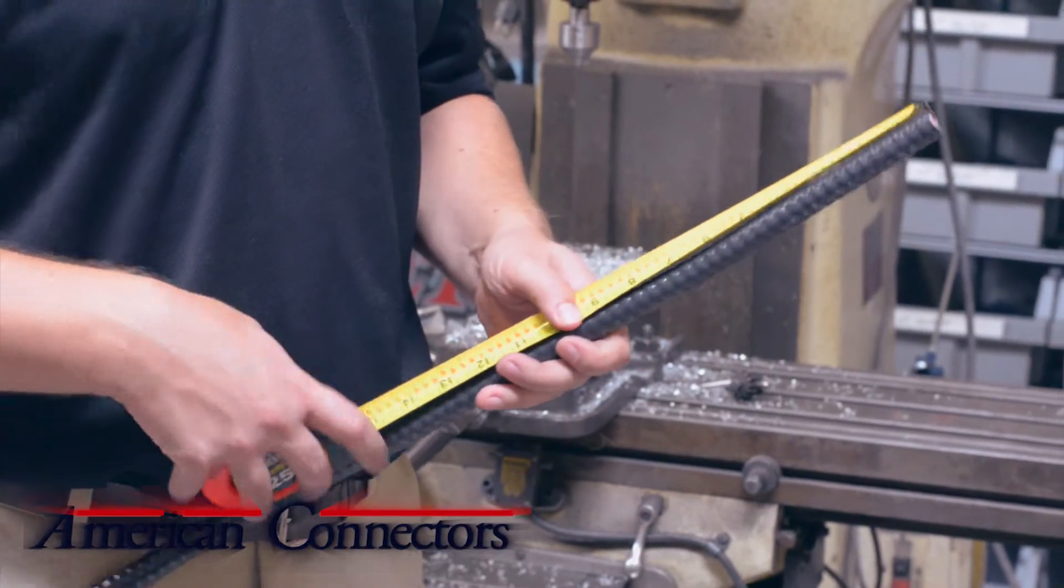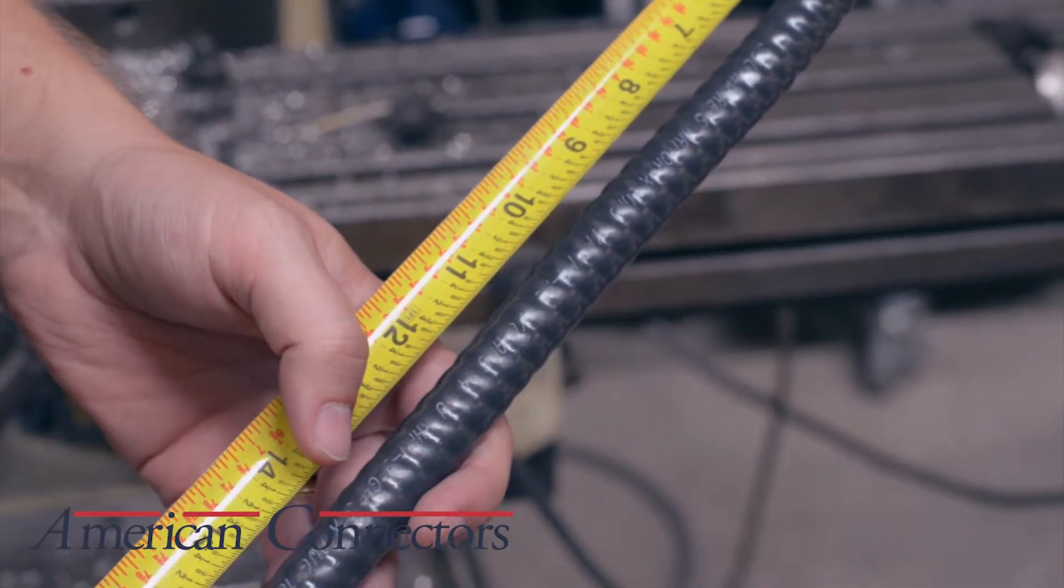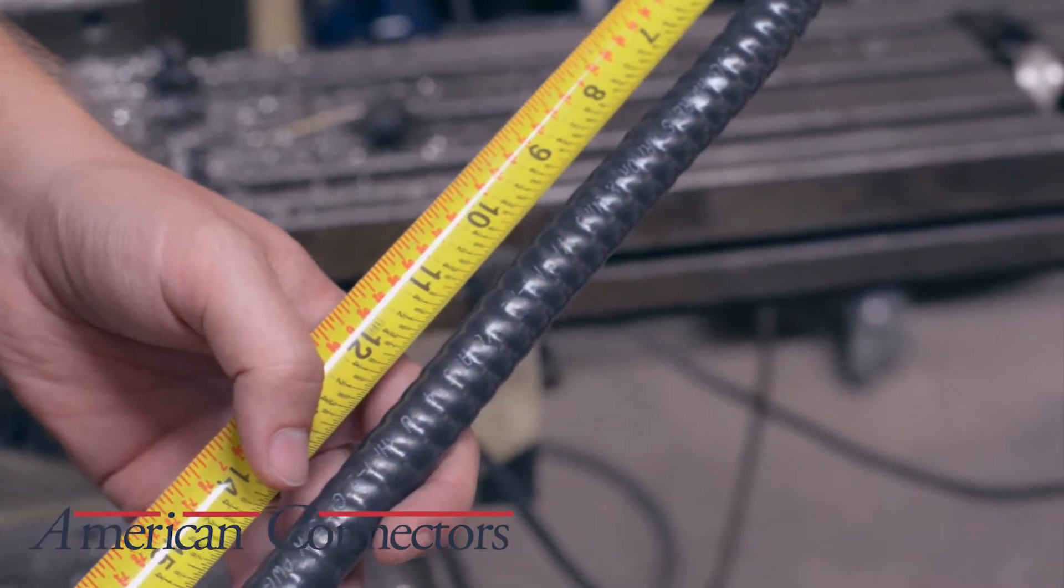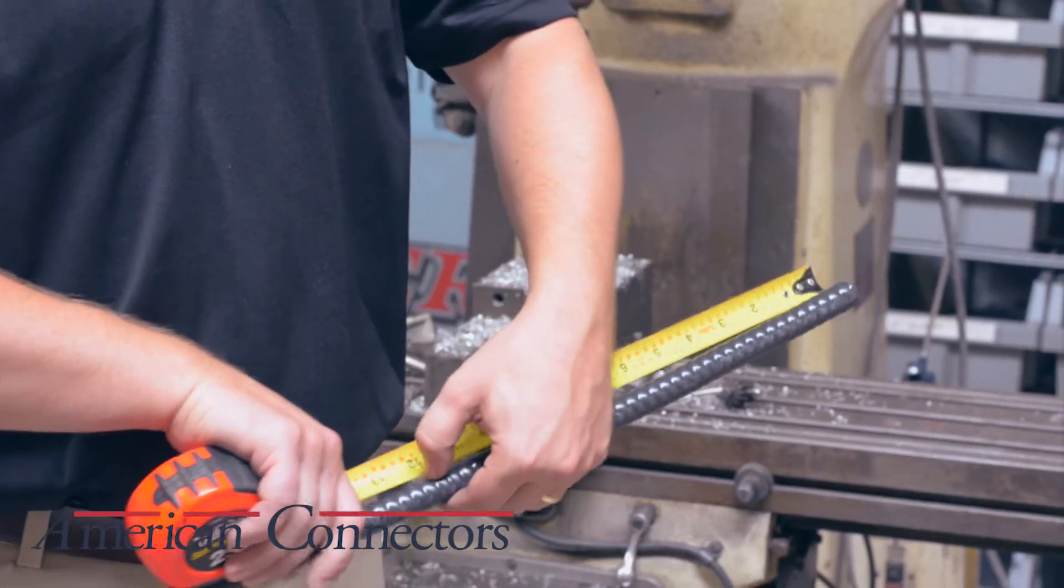When preparing the cable, the first thing we will do is measure the amount of cable needed for the connector plus the amount needed for the leads, and that is where we will make our cut.